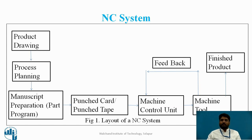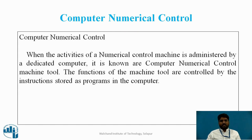This is the layout of the NC system. As punched cards cannot be used for complex products or parts, CNC machines — that is, Computer Numerical Control — were introduced to overcome this limitation. When the activities of the numerical control machine are administered by a dedicated computer, it is known as a computer numerical control machine tool. The functions are controlled by instructions stored as programs in the computer.